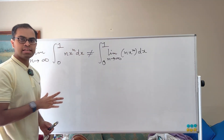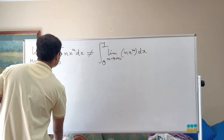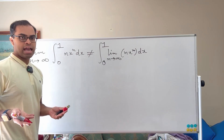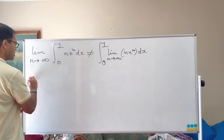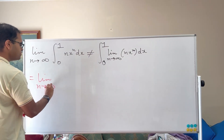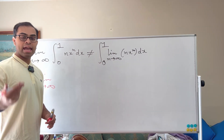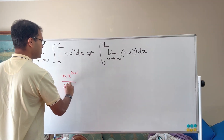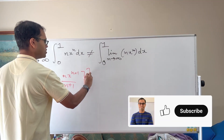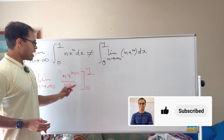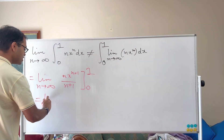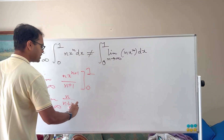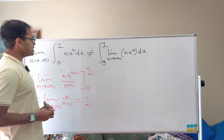The left-hand side is what's going to be easier to calculate. We have the integral from 0 to 1 of nx to the n dx. Fixing n, the antiderivative is nx to the n+1 divided by n+1. Evaluating from 0 to 1: at 0 the function is 0, and at 1 it's n over n+1. So we get the limit as n goes to infinity of n over n+1, which equals 1. So the left-hand side is 1.